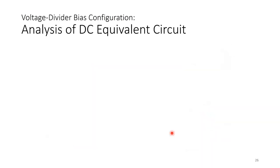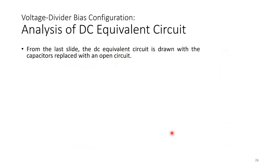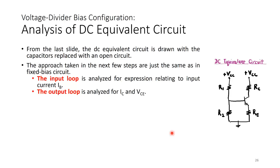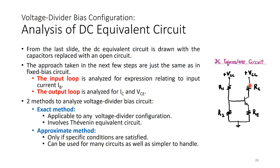For analysis of the DC equivalent circuit, the capacitors are replaced with open circuits, just as in the previous DC bias circuits. The approach is the same as in the fixed bias circuit: the input loop is analyzed for an expression relating to input current IB, and the output loop for IC and VCE. There are two methods to analyze the input loop: the exact method and the approximate method.